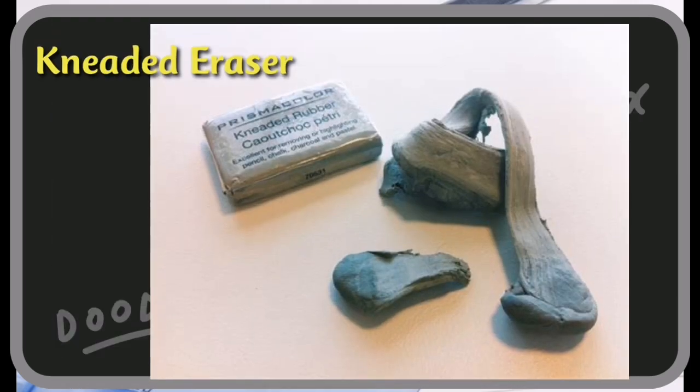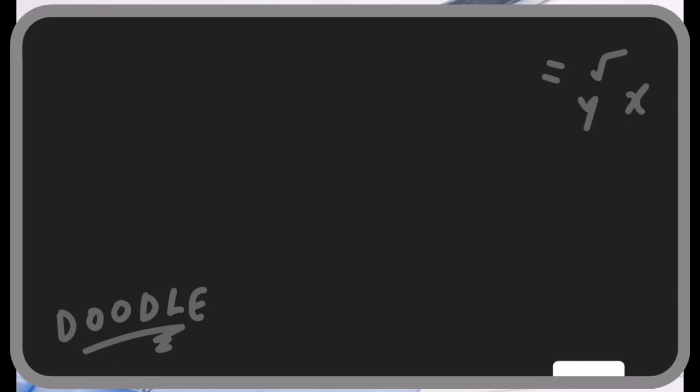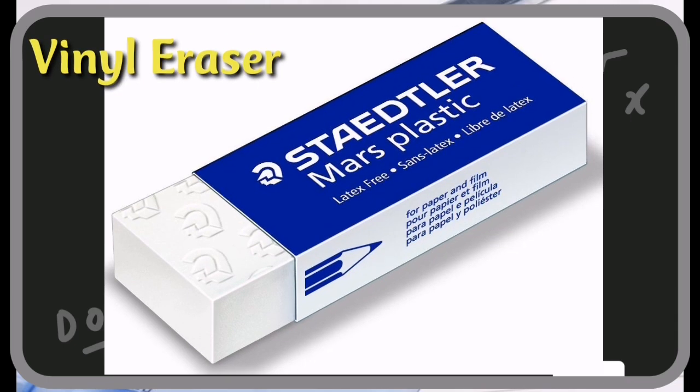Kneaded erasers work by lifting pigment such as graphite and charcoal off the surface. Because of this, paper is left undamaged with no smears. Vinyl erasers, also called plastic erasers, are also the toughest erasers on this list. If not used carefully, they can easily tear through paper. These erasers are definitely handy as they can erase almost anything, even ink. Vinyl erasers are preferred by draftsmen because of their clean and complete erasing.